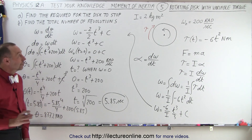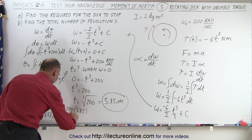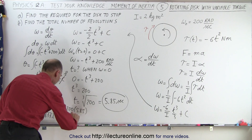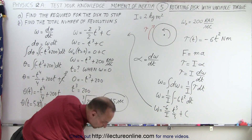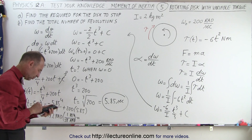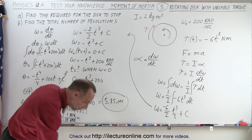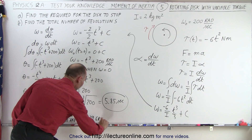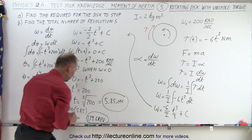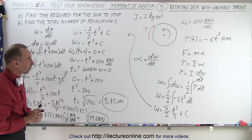Of course, the question asked for revolutions, not radians, so we need to convert. Dividing 877.2 radians by 2π gives 139.6 revolutions. That's how many times the disk turned around in the 5.85 seconds before it came to a complete stop.